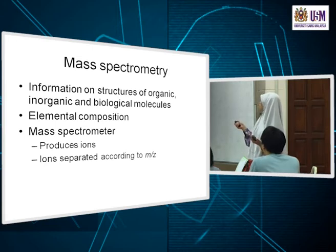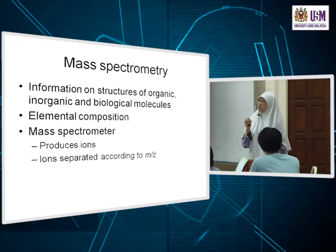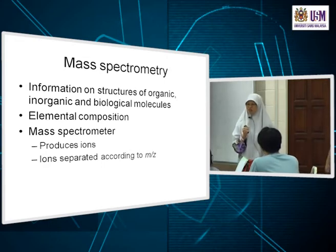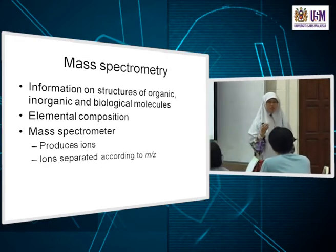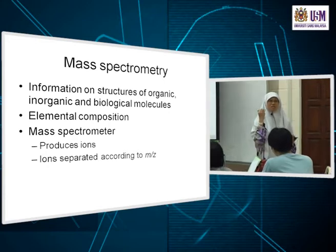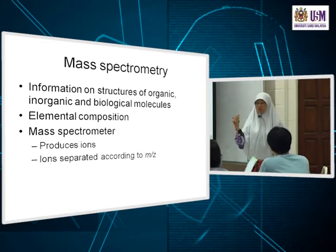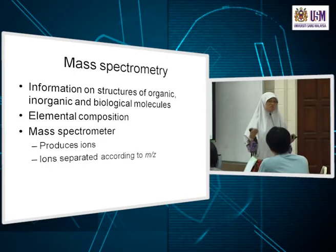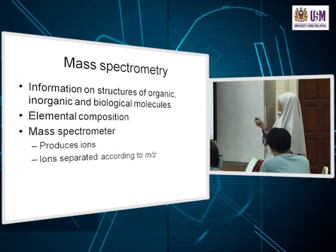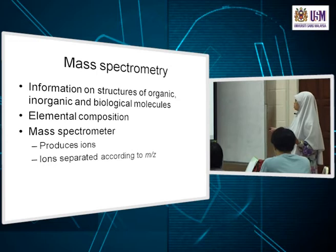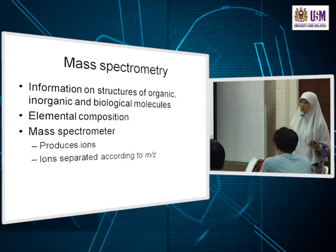Here we are talking about mass spectrometry. As the name goes, we are going to look at species which are formed as ions, and you detect these different species having different masses. They are charged species having different masses, and that's how you make qualitative identification of what the species are — through the mass-to-charge ratio. Each ion will have a certain mass and a certain charge.